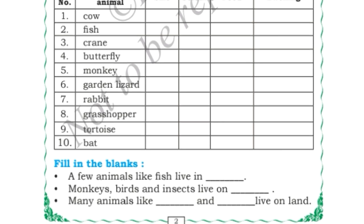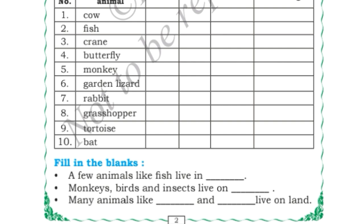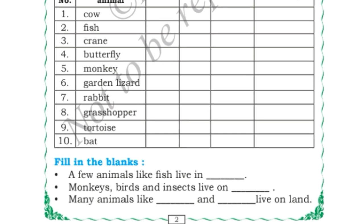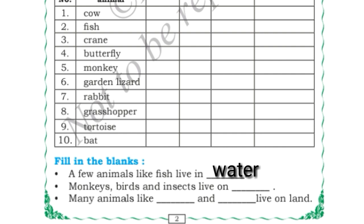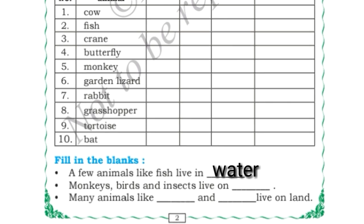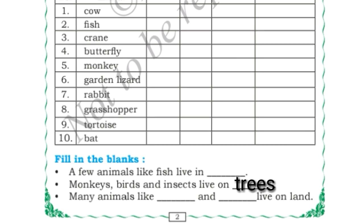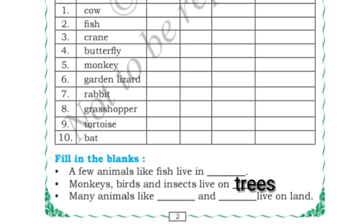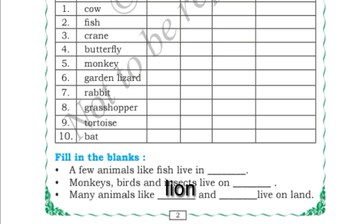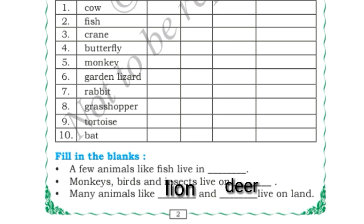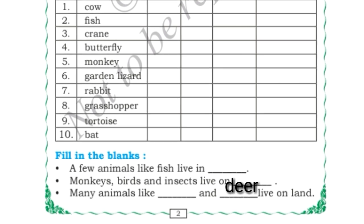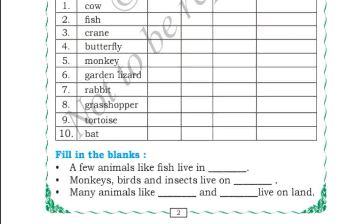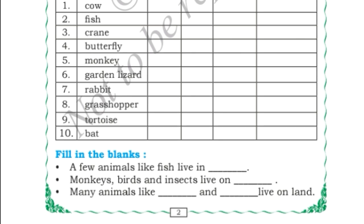Now fill in the blanks. A few animals like fish live in water, so here you can write water. Monkeys, birds, and insects live on trees, so you can write tree. Many animals like lion and elephant live on land — you can write lion, elephant, cow, or deer, whichever animals live on land.